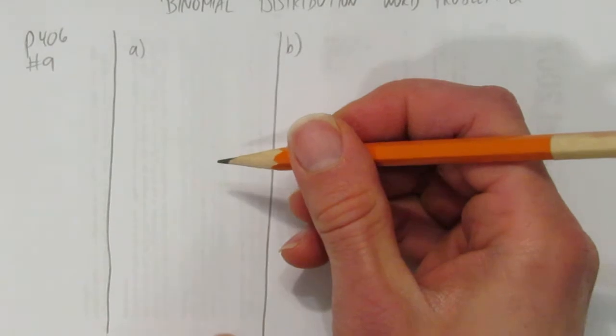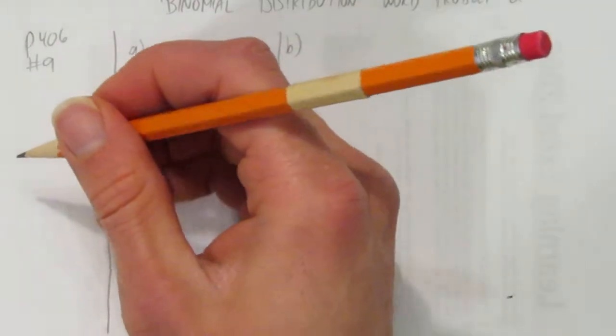In this video we'll look at how to solve a binomial distribution word problem. The problem says a factory produces computer chips with a 0.9% defective rate.